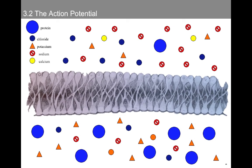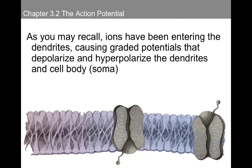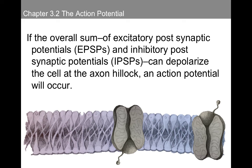When we look at a microscopic level at the distribution of molecules inside and outside of the neuron, the inside has more protein, which gives a negative charge compared to the extracellular area. On the outside, we have more sodium. On the intracellular space, we have more potassium. Ions have been entering the dendrites, causing graded potentials that depolarize and hyperpolarize dendrites as well as the cell bodies. If the overall sum of excitatory postsynaptic potentials (EPSPs) and inhibitory postsynaptic potentials (IPSPs) can depolarize the cell at the axon hillock, an action potential will occur.